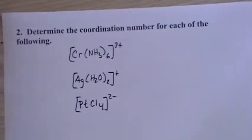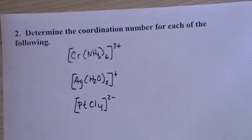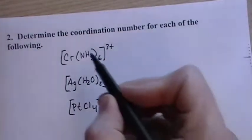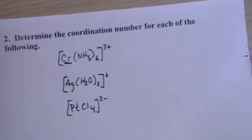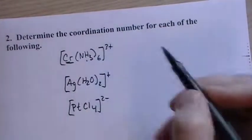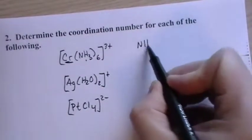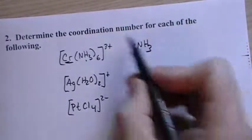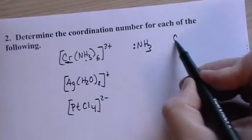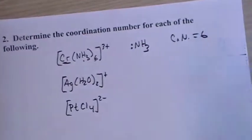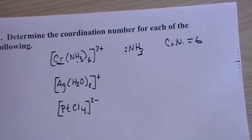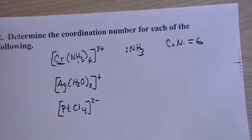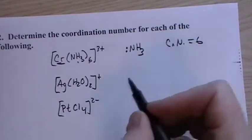Just know there's a lot of terms here. Okay, so determine the coordination number for each of the following. Well, the coordination number is how many lone pairs are attached to the center here. Each ammonia has one lone pair that can attach, so since there's six, the CN for this guy is six, and that's it. It can get a little dicey when we talk about bidentate and polydentate ligands, but we'll get to that.